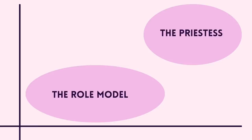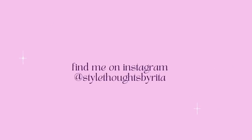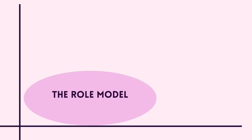There are five archetypes in the write-up quadrant: the Role Model, the Priestess, the Icon, the Playful Dame or Princess, and the Power. I'll talk about each archetype's story, some styling suggestions, and give a celebrity example. For normal-person clothes, I'll share examples on my Instagram in the coming week.